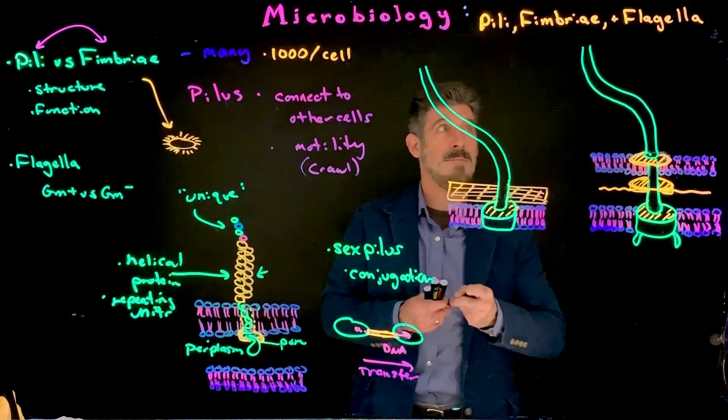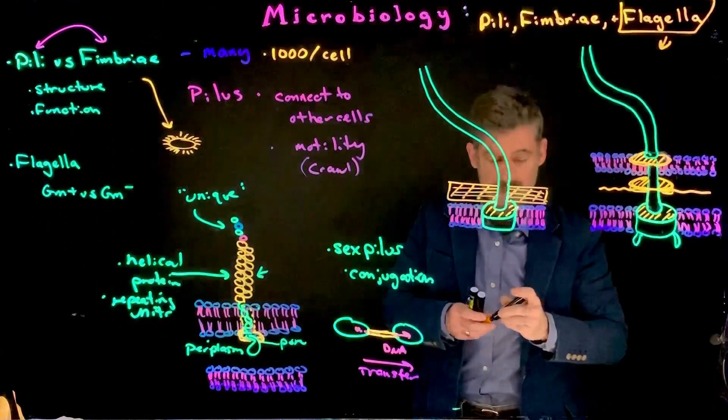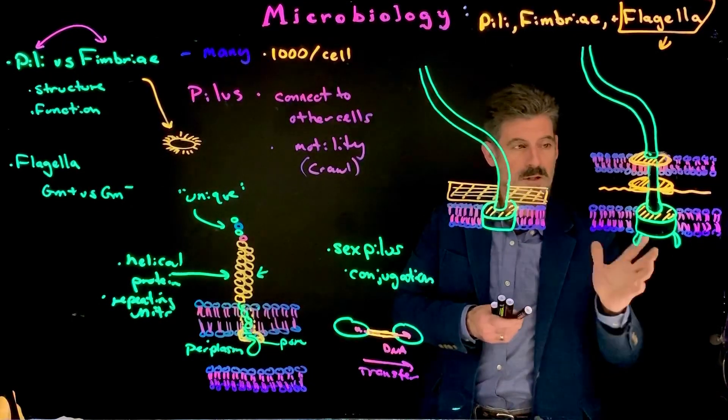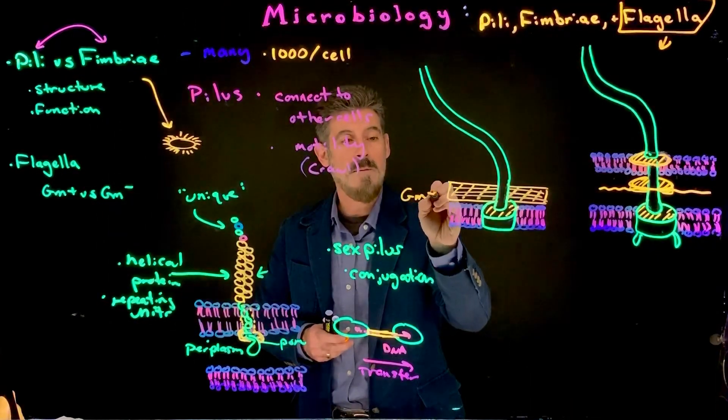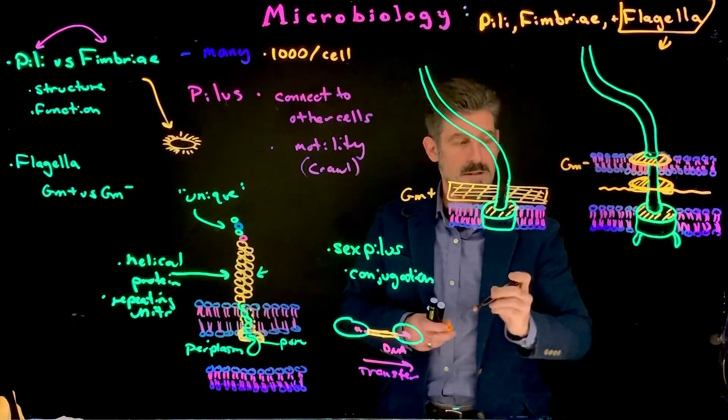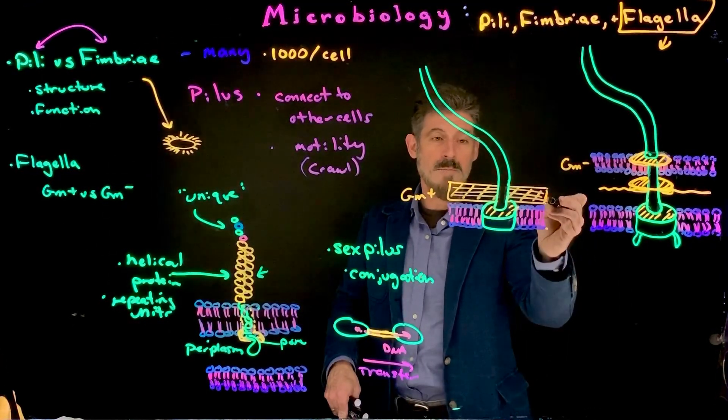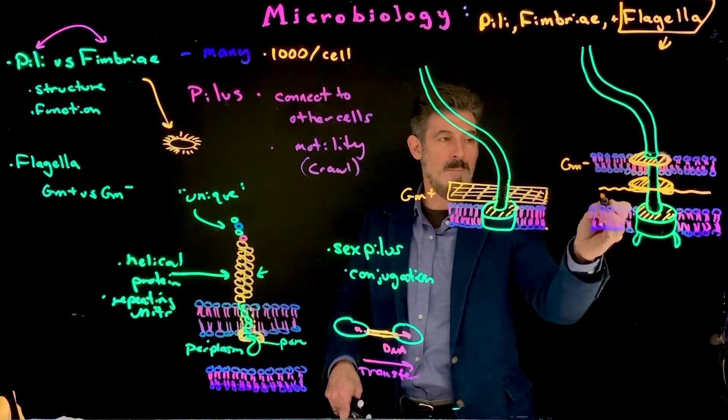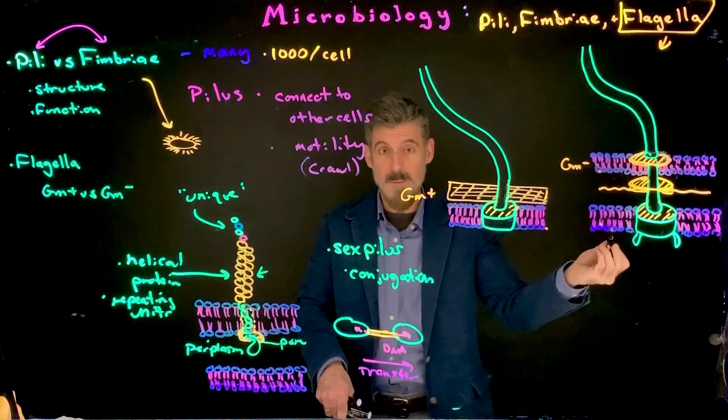Now we're going to move to flagella. In general, the flagella tend to be very similar between, as you can see here, this is a gram-positive bacteria, and over here we have the gram-negative bacteria, based on the cell wall. Membrane, peptidoglycan. Membrane, peptidoglycan, very thin layer, and then the second cell membrane, or cell wall.